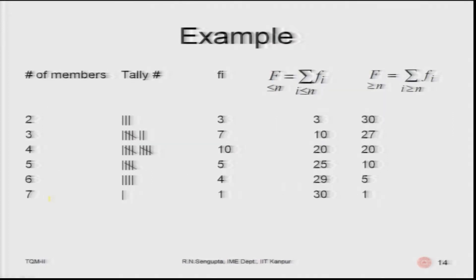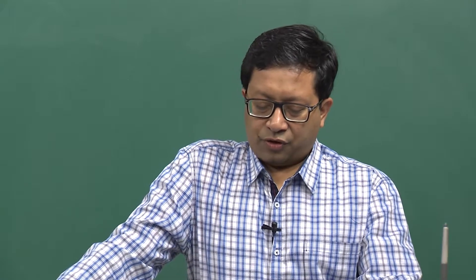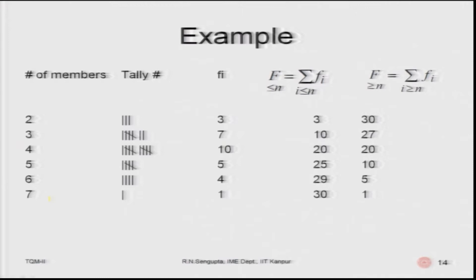We write the family member numbers, the tally numbers in the second column, and Fi — the frequency — in the third column. Frequencies start for family size 2 with count 3, family size 3 with count 7, family size 4 with count 10, and family size 7 with count 1. The less-than or greater-than cumulative frequencies are given by adding the frequencies correspondingly.